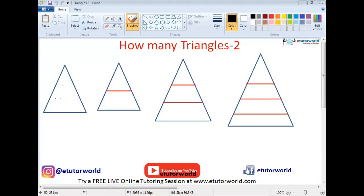The first triangle is a normal single triangle. So we can easily say that there is just one triangle here.